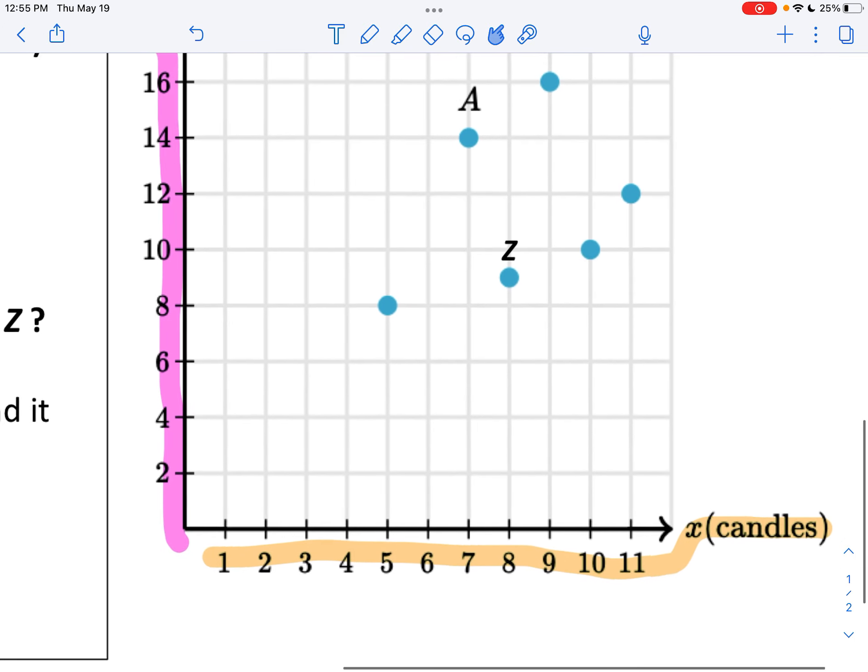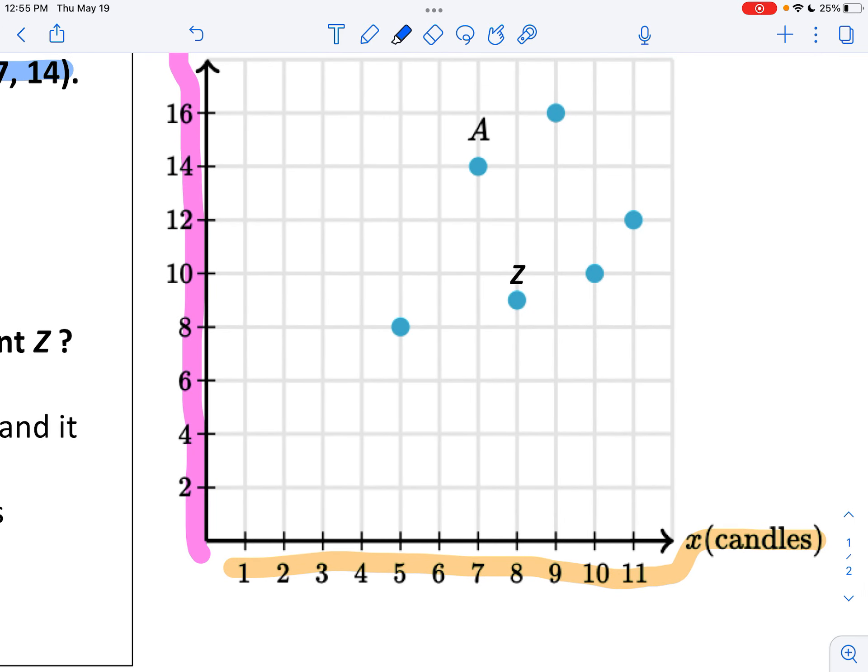So if I look at point A and I go straight down, you can see that I get to 7. And if I go straight across I get to 14. So the question is, seven what?